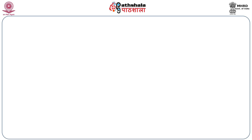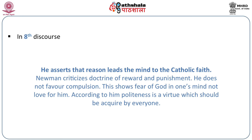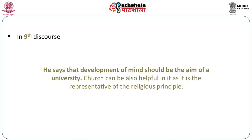In the seventh discourse, Newman suggests that the intellect should be trained about truth. He wants that kind of education which is able to understand truth. With the help of liberal education, one can improve his professional skill. In the eighth discourse, he asserts that reason leads the mind to the Catholic faith. Newman criticizes the doctrine of reward and punishment and does not favor compulsion, as this shows fear of God in one's mind, not love for him. According to him, politeness is a virtue which should be acquired by everyone. In the last discourse, he says that development of mind should be the aim of a university, and the church can be helpful as it is the representative of the religious principle.